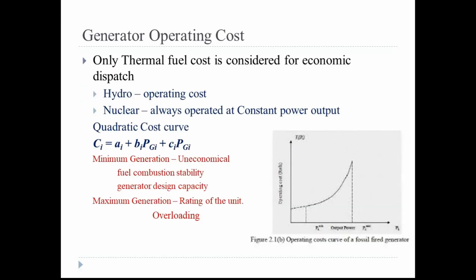When studying the generator operating cost for economic dispatch, we only consider the thermal power station curve. Other conventional generating stations such as hydro and nuclear are normally excluded. In the case of hydro power plants, the operating cost or maintenance cost is approximately equal to zero, which is why we neglect the hydro curve.